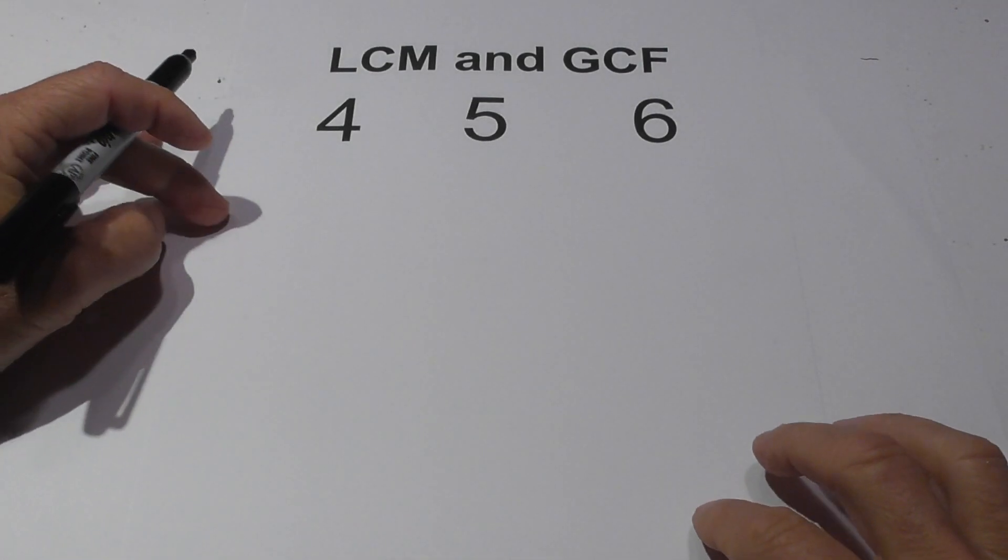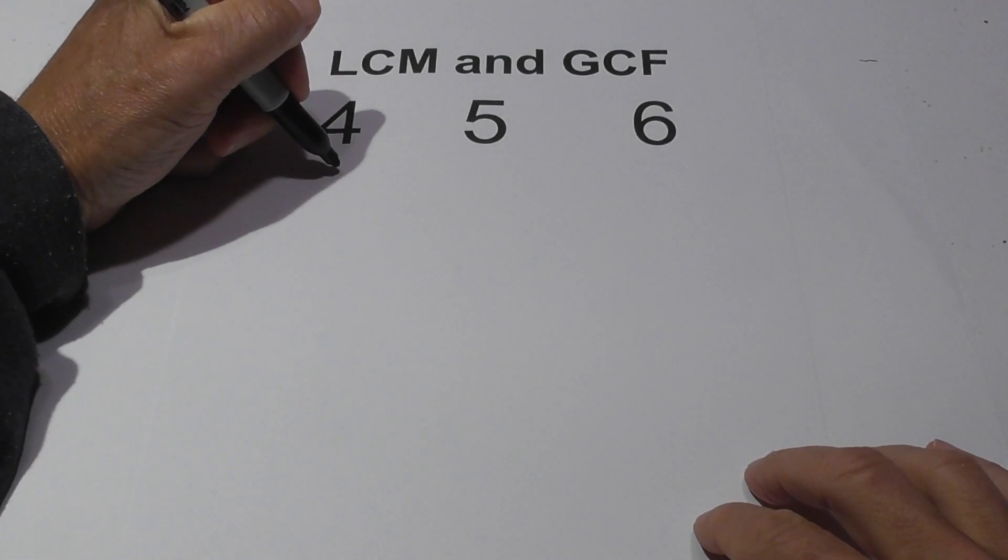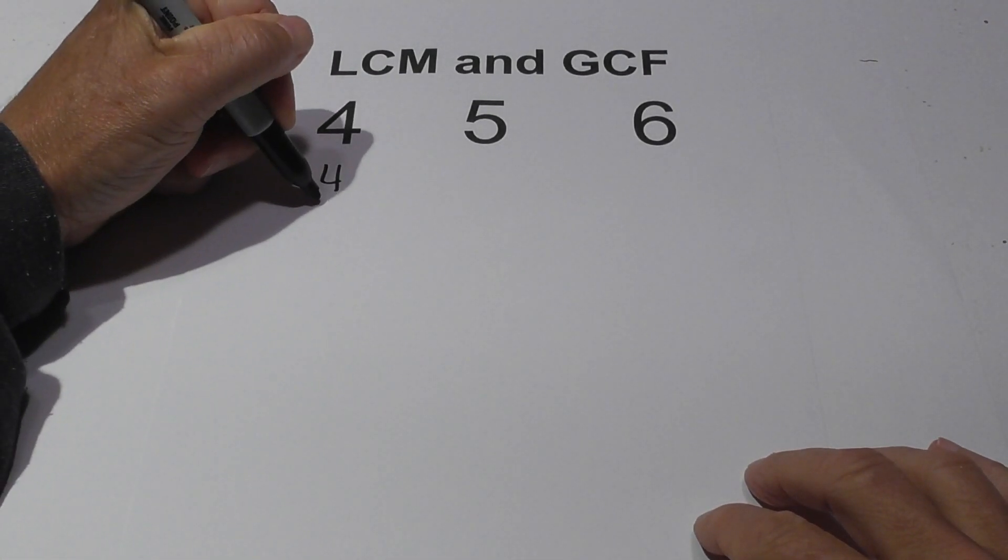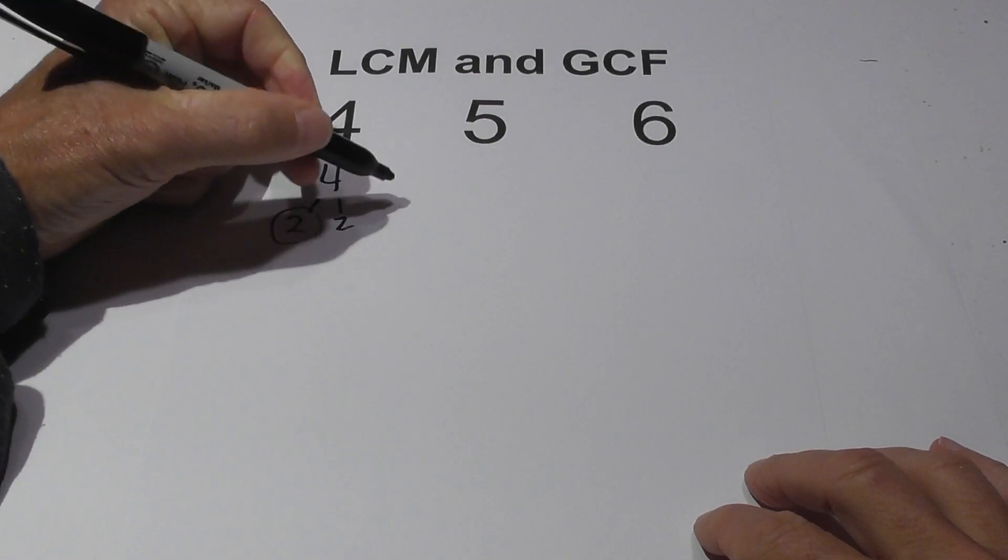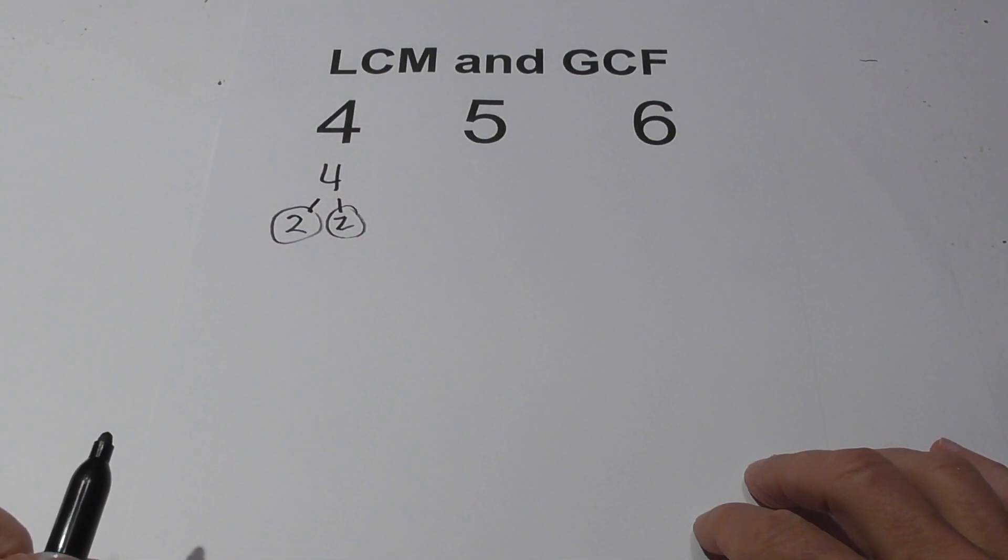I like to use a factor tree, so I'll go ahead and get started. The first factor tree for 4 is 2 and 2, so I'll circle 2 and 2 because they're both prime.